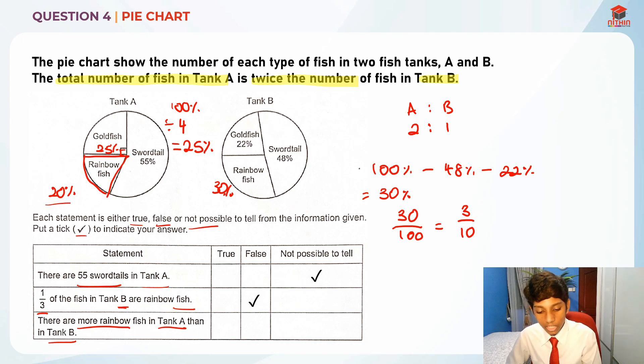So 20 times 2 is actually 40, and 40 is actually greater than 30 because tank A to tank B ratio is 2 is to 1. Remember tank A is twice the amount of tank B. So actually for tank A the number of rainbow fish are actually more than tank B, so the last statement is actually true.